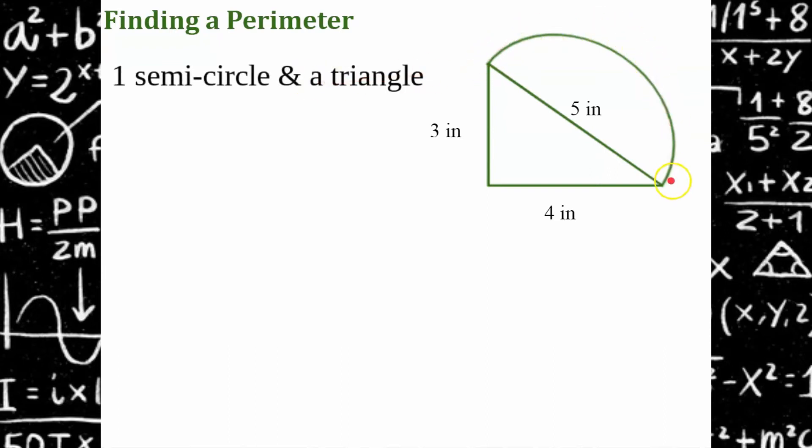We have a semicircle and a triangle making up our composite figure. So we only have half of the circle, so we're going to find half of the circumference and we need to add the two sides. If I start right here at this point, I'm going to do half the circumference, one side, two sides.